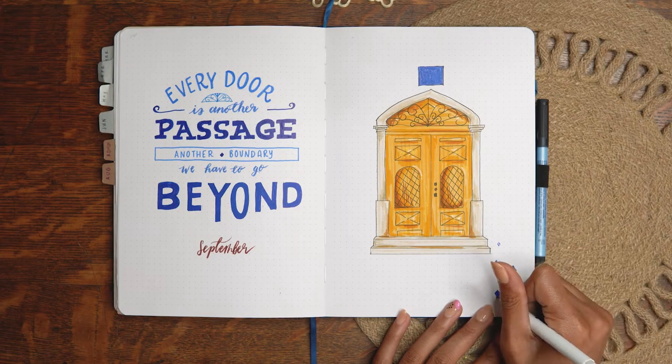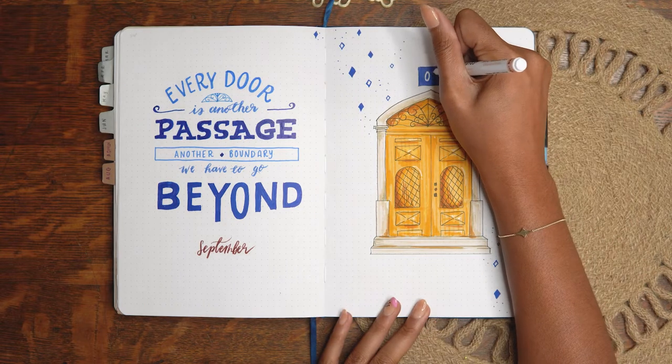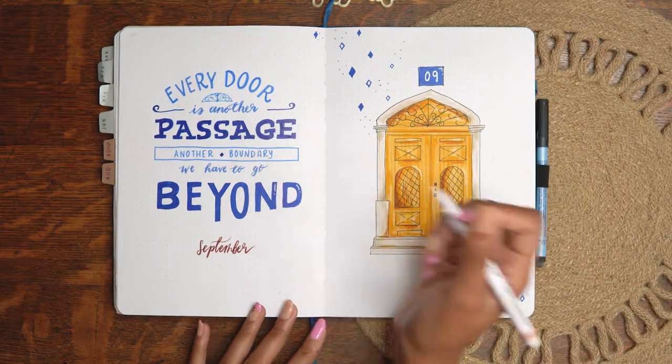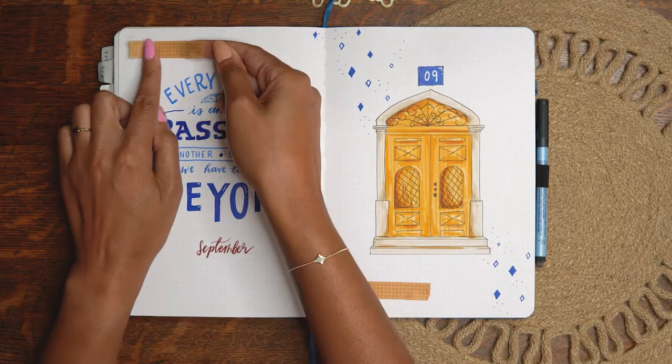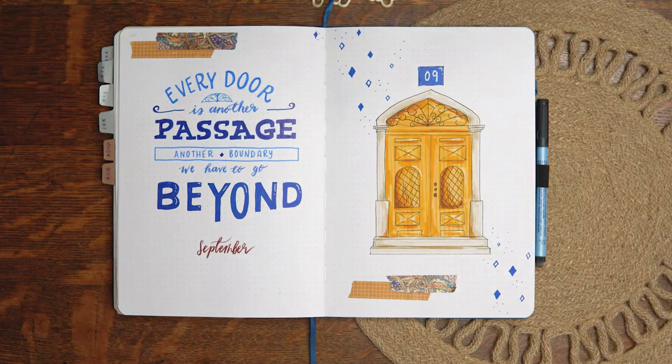For the yellowish golden door itself I maybe use two different markers. The illusion of shadows and dimension and all of that just comes from going over the same spots more than once. So just a little tip, if you don't have that many markers you can create different shades by doing that.